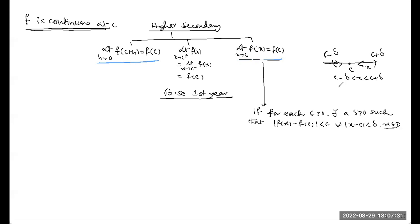Consider x in the interval (c minus delta, c plus delta), meaning mod of x minus c is less than delta. For all such x in that neighborhood, wherever f(x) goes, it goes to f(c). So whenever x is close to c, f(x) is close to f(c).